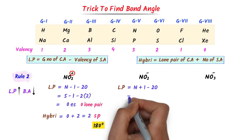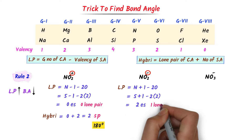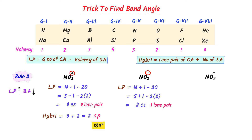For NO2-, the central atom is nitrogen (group 5). This negative sign means the ion has gained one electron, so I write plus 1. There are 2 oxygen atoms with valency 2. After calculation I get 2 electrons, so there is 1 lone pair. Hybridization: 1 lone pair plus 2 surrounding atoms equals 3, meaning SP2 hybridization. The bond angle will be 120 degrees.